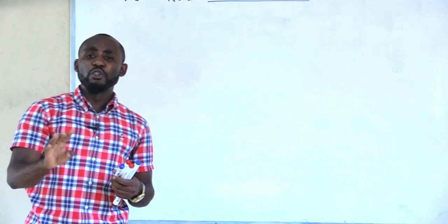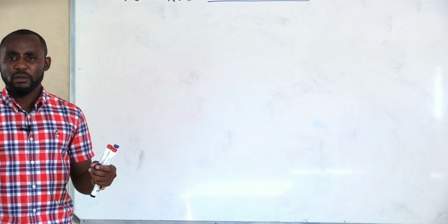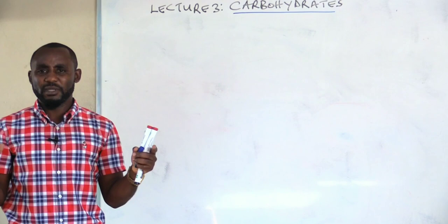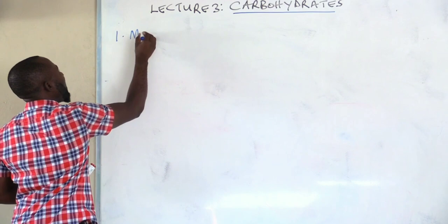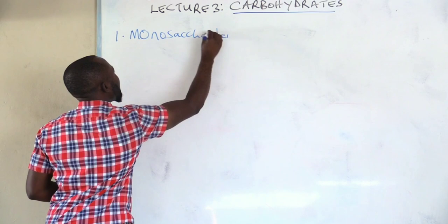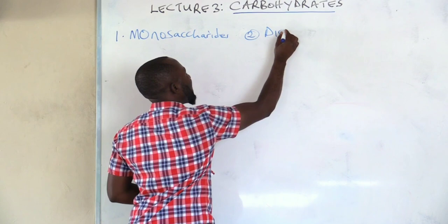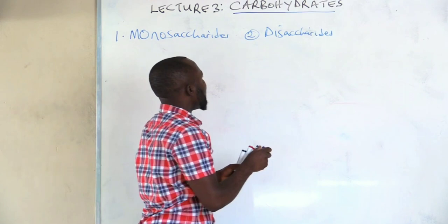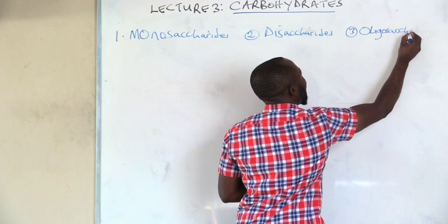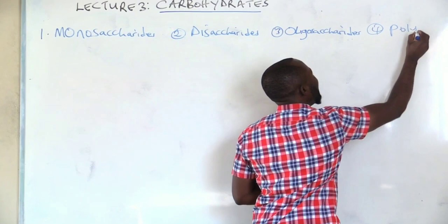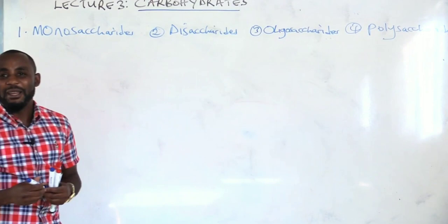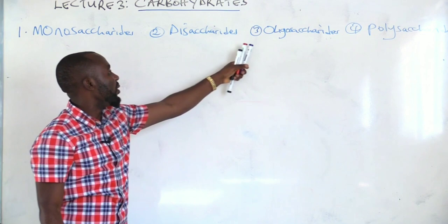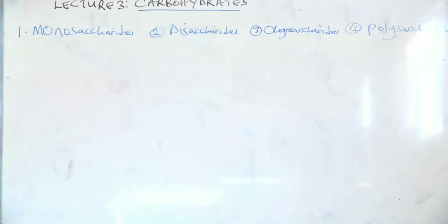Carbohydrates are divided into four important groups. I'm going to give you the groups and show you an overview — what is comprised in each group, the composition of each. Number one: monosaccharides. Number two: disaccharides. Number three: oligosaccharides. Number four: polysaccharides.